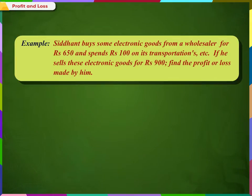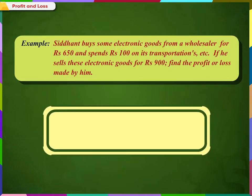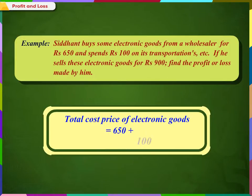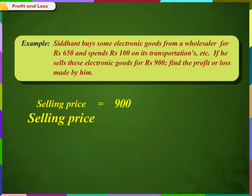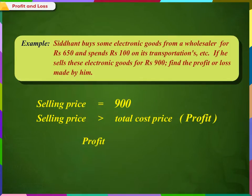Let us solve one problem based on this. Siddhant buys some electronic goods from a wholesaler for Rs. 650 and spends Rs. 100 on transportation, etc. If he sells these electronic goods for Rs. 900, find the profit or loss made by him. Since Siddhant buys electronic goods for Rs. 650 and spends Rs. 100 on transportation, the total cost price of the electronic goods is Rs. 650 plus Rs. 100, which equals Rs. 750. Selling price is equal to Rs. 900. Since the selling price is greater than the total cost price, it is a profit. So, profit is equal to Rs. 900 minus Rs. 750, which equals Rs. 150.